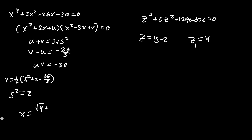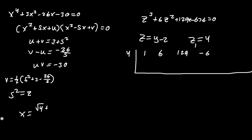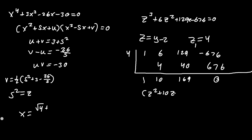Now we factor z = 4 out of the cubic using synthetic division: coefficients 1, 6, 129, −676, with root 4. Dropping down: 1, then 1×4=4, so 6+4=10; then 10×4=40, so 129+40=169; then 169×4=676, and −676+676=0. So the remaining quadratic factor is z² plus 10z plus 169.